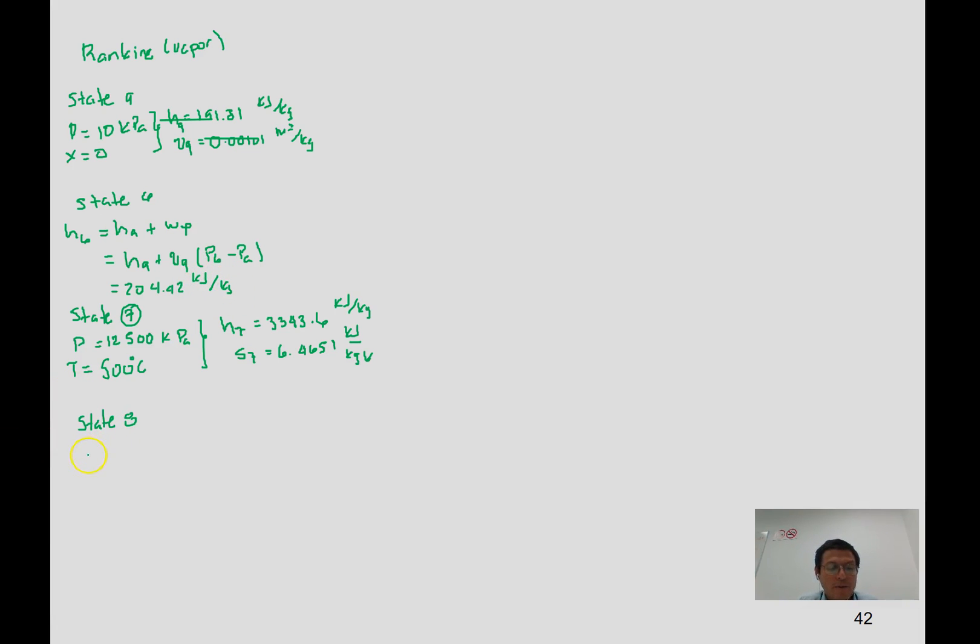State 8, we know that pressure is 10 kilopascals, and s8 equals s7. This will be the isentropic enthalpy, which is 2046. That along with the efficiency which is 0.9 leads to h8a to be 2176.54.